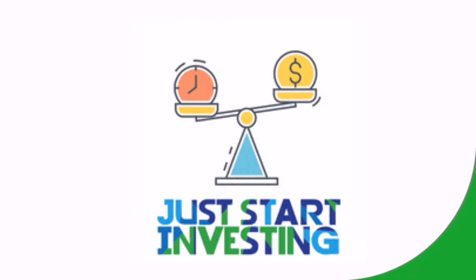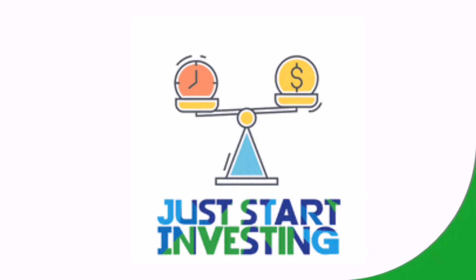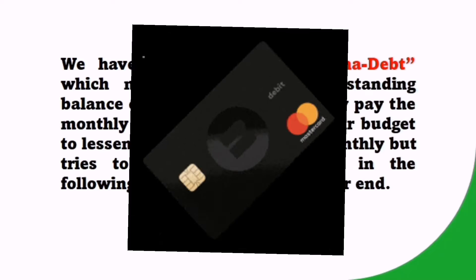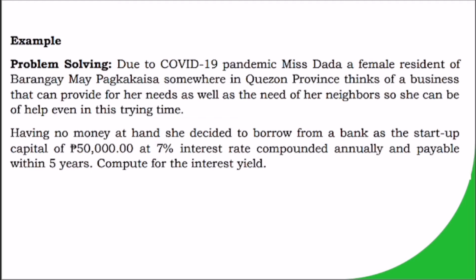Compound interest will change your view in life regarding loans, borrowings, savings, and investment. Are you familiar with credit cards? We have what we call permadebt, which means a continuous outstanding balance of a credit card where they pay the monthly minimum that fits their budget to lessen the burden of interest monthly, but tries to add some debt again in the following month — so the debts never end.